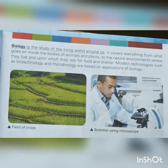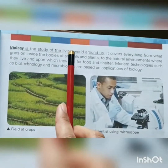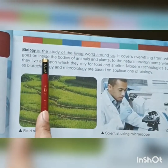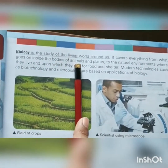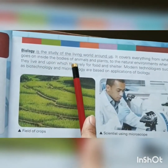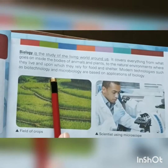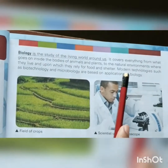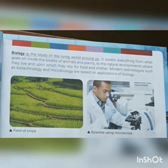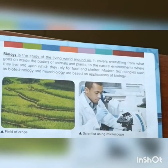Now, moving toward the first branch of science, which is biology. Biology is the study of the living world around us. It covers everything from what goes on inside the bodies of animals and plants to the natural environments where they live and upon which they rely for food and shelter. Biology is a Greek word — 'bio' means life and 'logos' means study. So biology is defined as the science of life and living organisms.